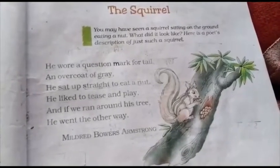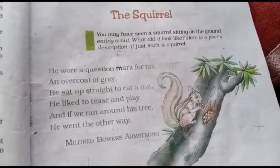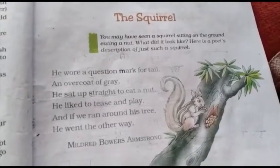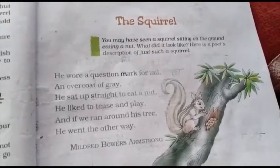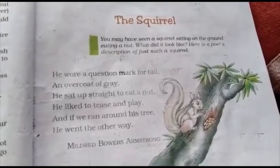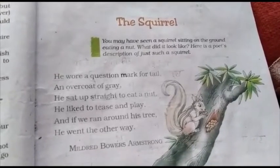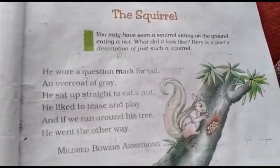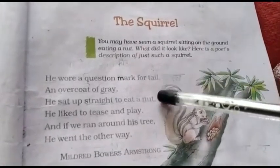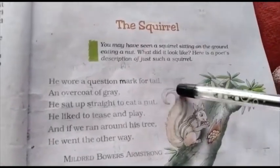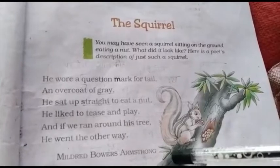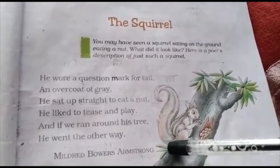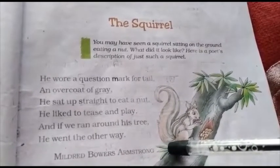Here the poet has described a squirrel. The poet says that the tail of the squirrel is shaped like a question mark, and it is wearing a grey overcoat on its body.